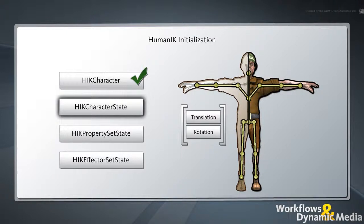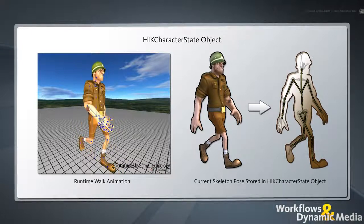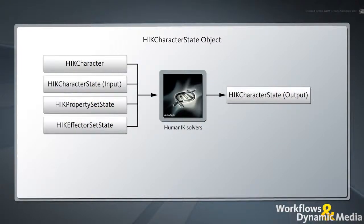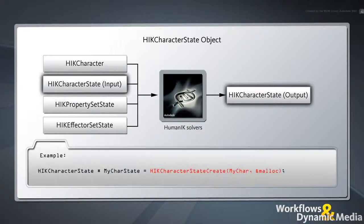The second step in the initialization process is to create an HIKCharacterState object. The HIKCharacterState contains the translation and rotation matrix for each of your character's nodes — think of it as taking a snapshot of your character's pose at the current frame. The HumanIK solvers use the HIKCharacterState twice at runtime: once as input to provide a starting pose for the IK calculations, and again as output when the solvers complete their calculations. To create the HIKCharacterState, call the HIKCharacterStateCreate function with pointers to your HIKCharacter and to a memory allocation callback function as arguments.